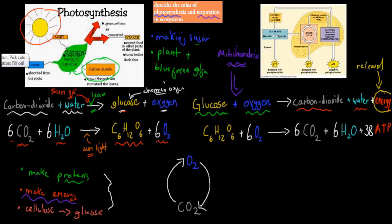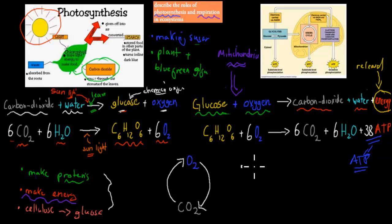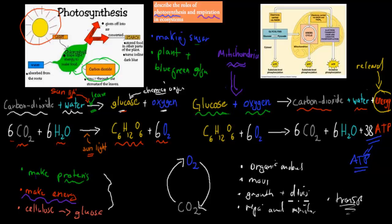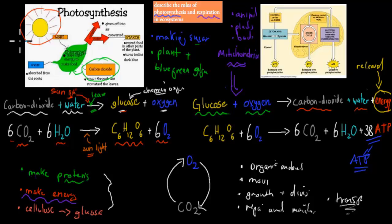We have released this energy, and in our body we call it ATP. Remember from the last video — what do we need energy for? Energy is there to make organic molecules. We need energy to be able to move, to grow and divide our cells, to repair and maintain our cells, and also for transport. These are some of the reasons why we need cellular respiration. And cellular respiration happens in all organisms: animals, plants, bacteria — they all need energy, and this is the process they use.